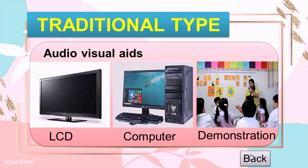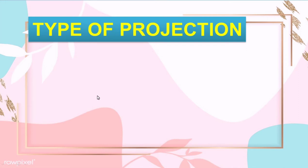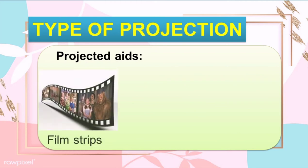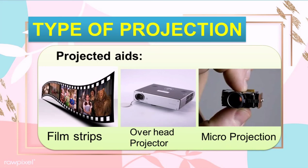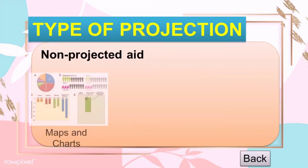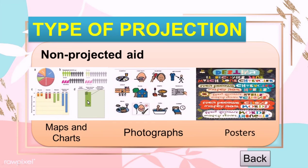The second classification is based on type of projection. There are two types: the first one is the projected aids, like film strips, overhead projectors, and microprojections — these aids project visuals onto a screen. The second type is the non-projected aids, like maps and charts, photographs, and posters — these are a type of visual that are not projected onto a screen.